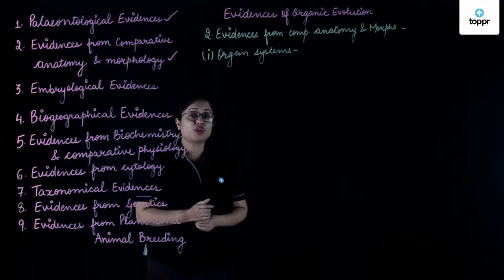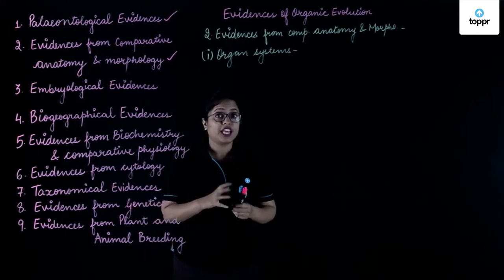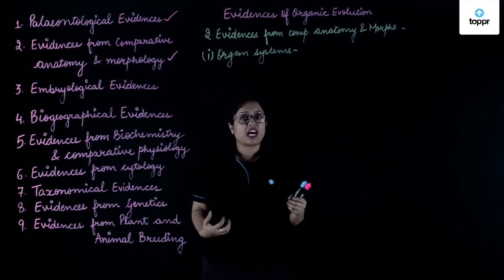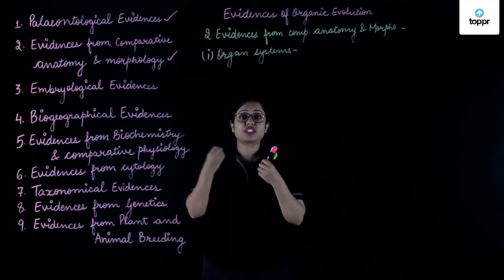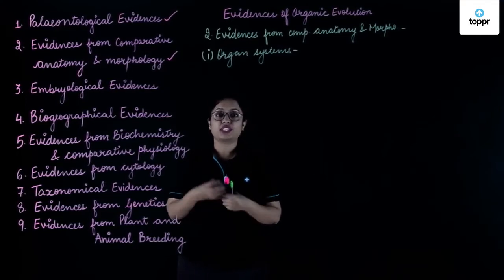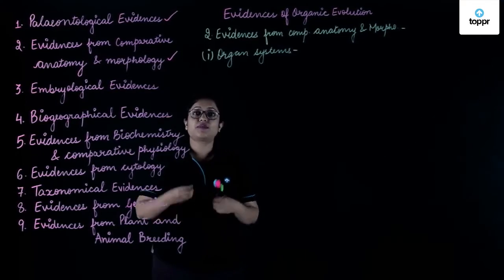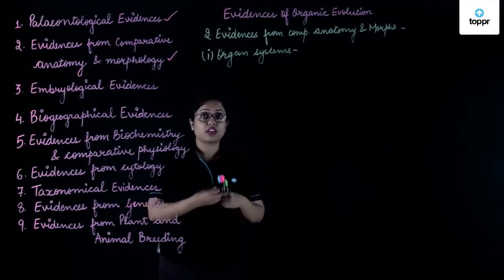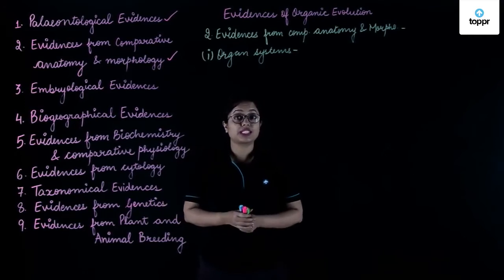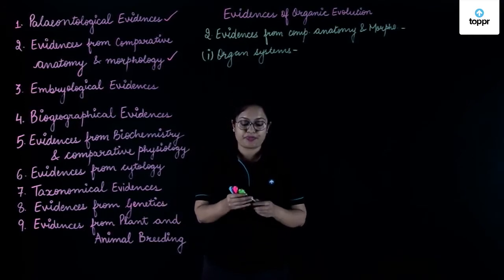Various systems of organs in various groups of animals are almost similar. For example, the respiratory system, excretory system, nervous system, blood vascular system, etc.